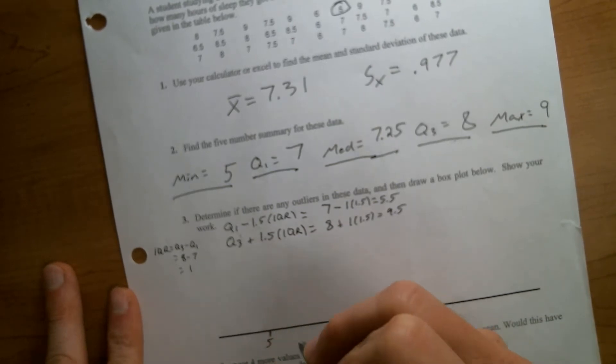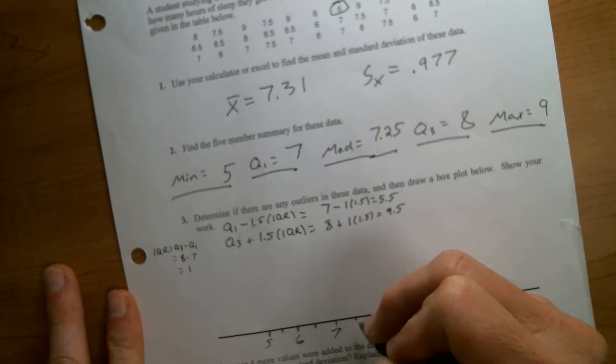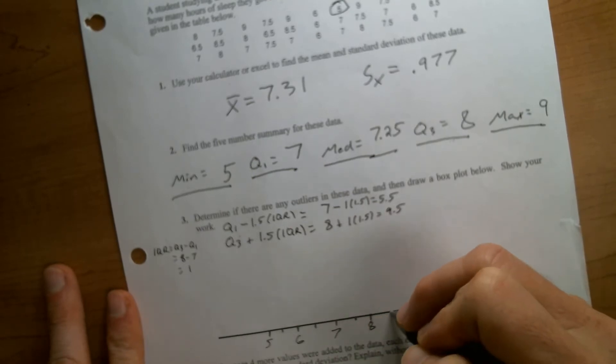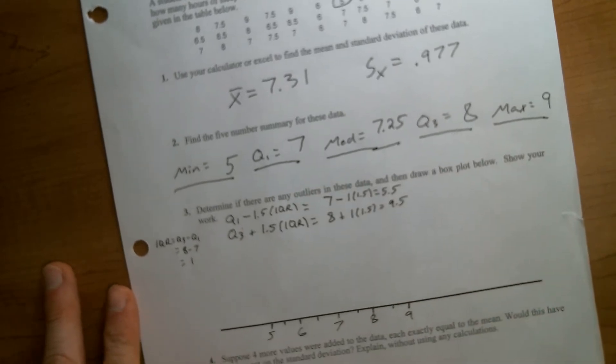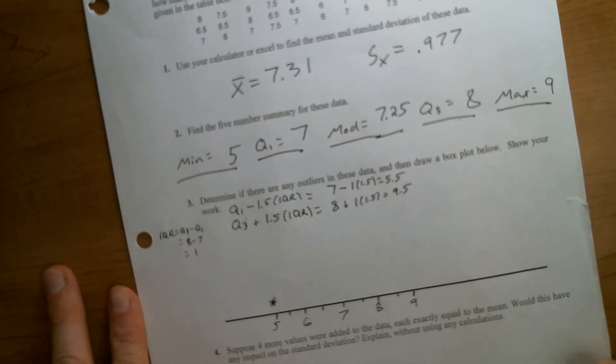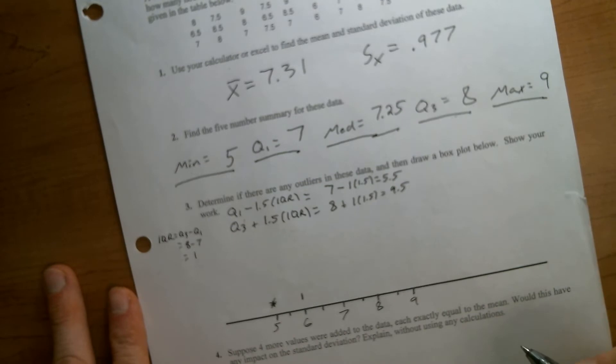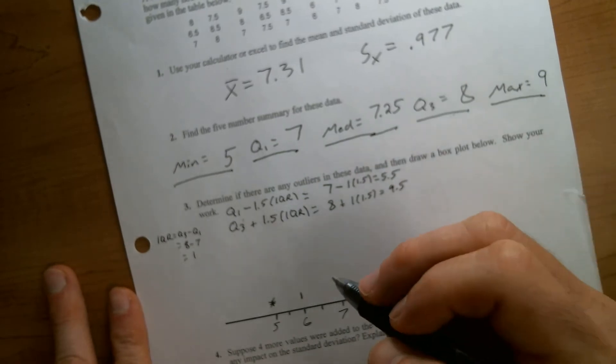So when we make our box plot, I'm going to make this 5, that's 5.5, that's 6, 6.5, 7, 7.5, 8, 8.5, 9. So there's our number line. We're going to put an asterisk at the 5 to designate that it's an outlier. Our whisker is going to only extend to the lowest non-outlier, which is at 6.